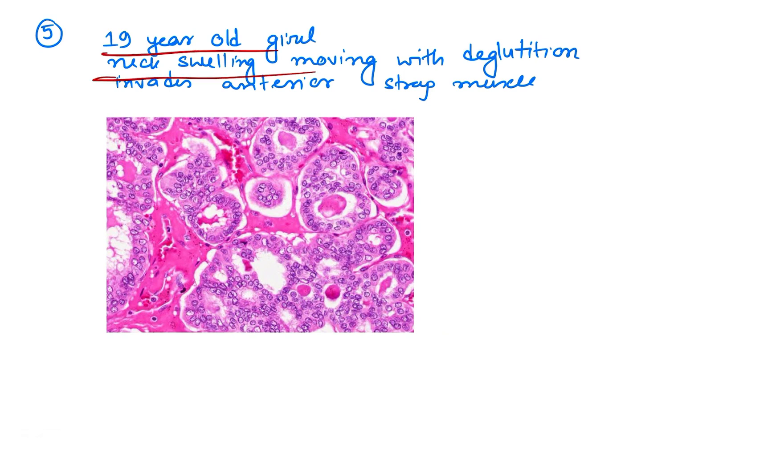Coming to question number five: 19-year-old girl presented with neck swelling moving with deglutition inverse of the anterior strap muscle. And here is the histopathological image. This image shows features like this nucleus feature called Orphan Annie nuclei.